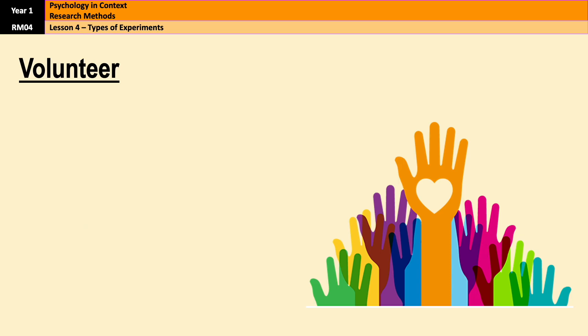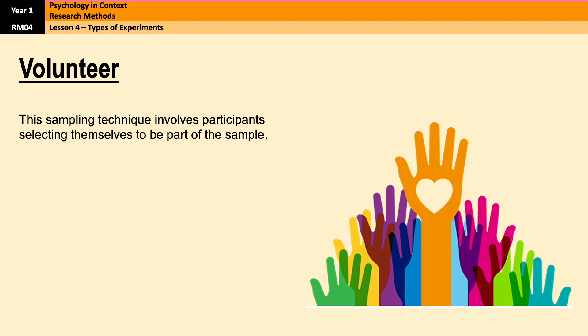Next we have volunteer sampling. Volunteer sampling involves participants self-selecting to take part in the study, usually in response to an invitation or an advert of some kind — traditionally in a newspaper, but these days more likely online. For example, a researcher might post an advert asking people to take part in an experiment on memory, and anyone who responds could make up part of that sample. This method is very easy and requires minimal effort on the part of the researcher, because participants are willingly coming forward and the researcher simply has to put an invite out and wait.